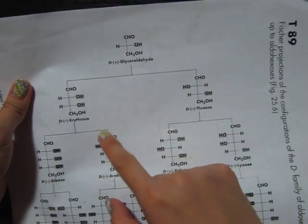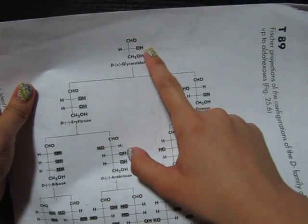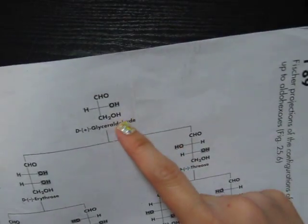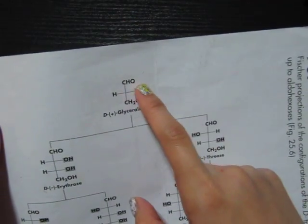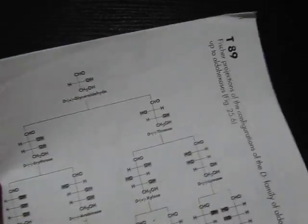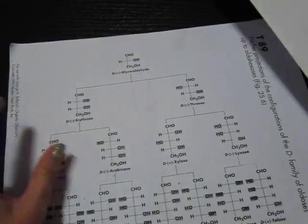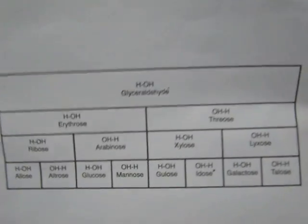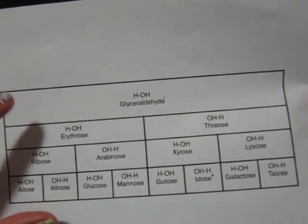If it says D, it basically means that the OH group on the glyceraldehyde is on the right side — so that means it's a D-family. Anyway, let's get started. I figured out a way to minimize this whole chart into just something this small, which will be a lot easier to memorize than that big thing over here.